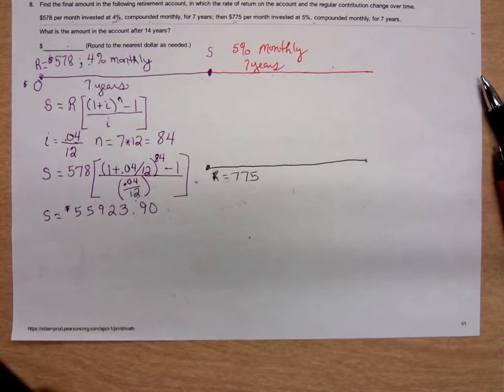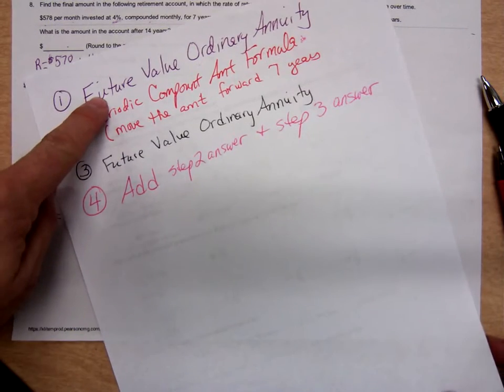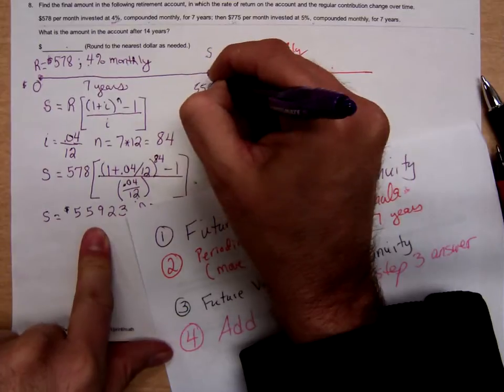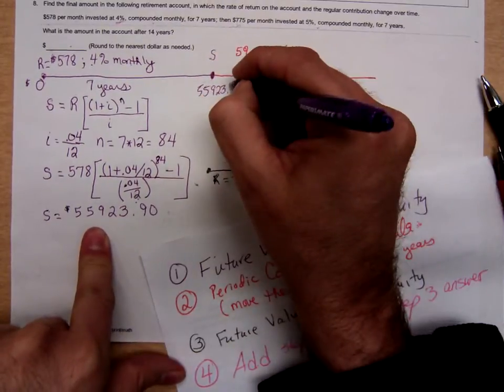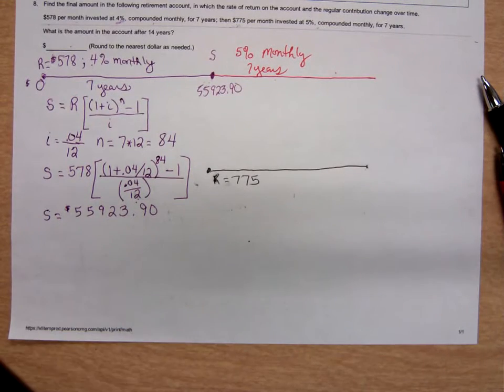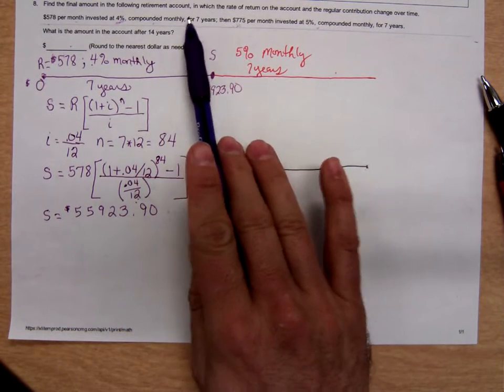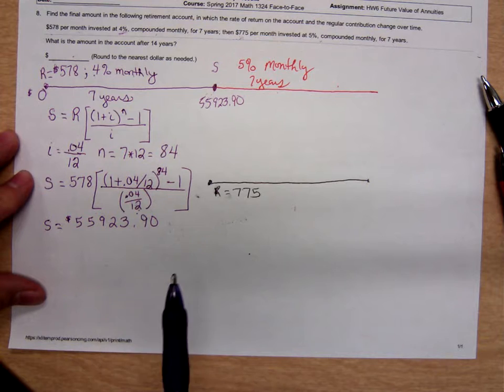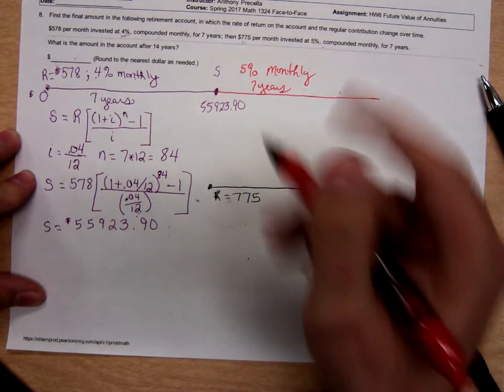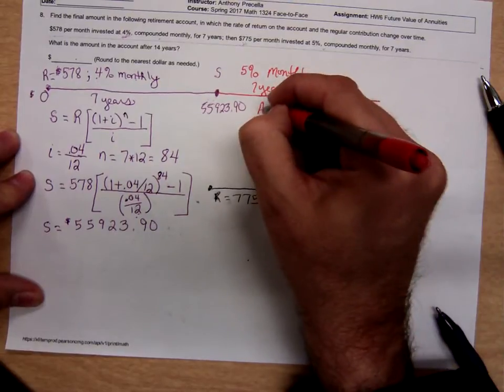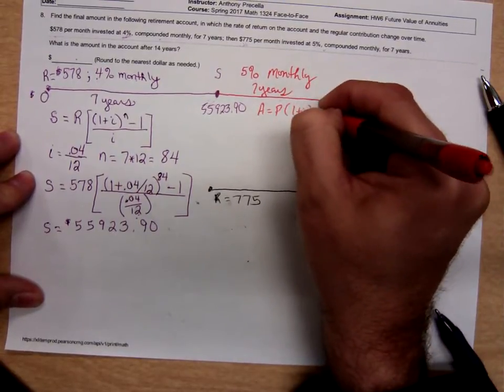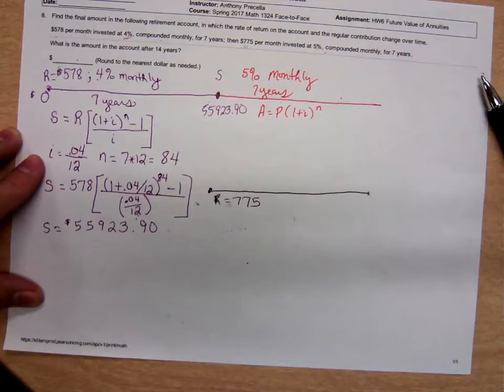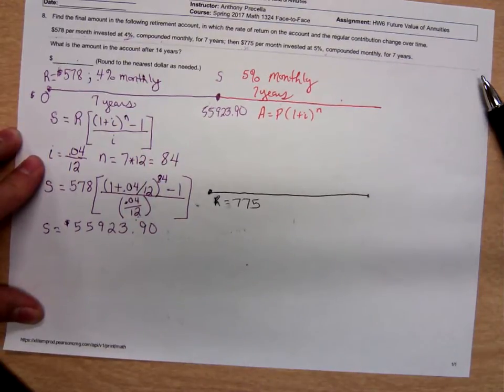So this one's going to be a little bit messier to punch in. Parenthesis, 1 plus 0.04 over 12, close parenthesis, raised to the 84th power, subtract 1. So I'm punching in the top part. I'll hit enter. And then I'm going to say divided by that bottom, parentheses, 0.04 over 12. Close parenthesis. Now, you can't just round that I to 0.0033 or something. That won't be precise enough. That's why I've got to use 0.04 over 12.